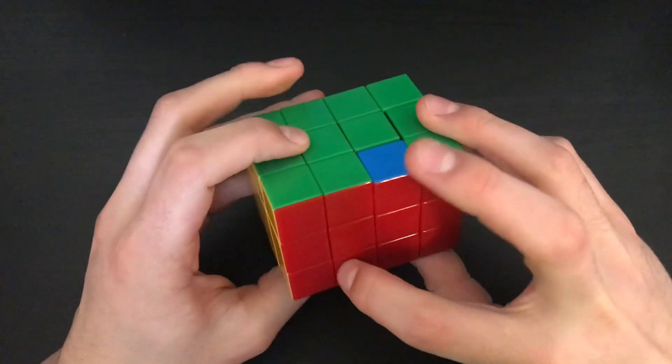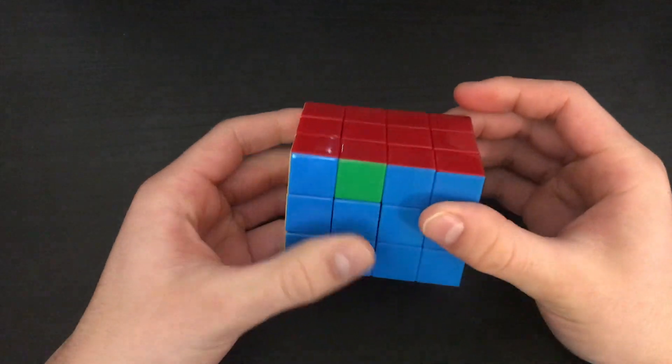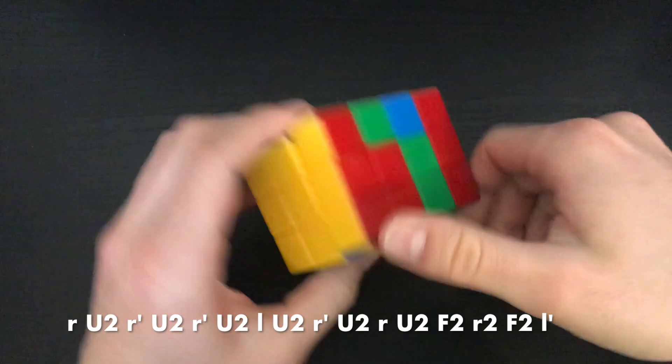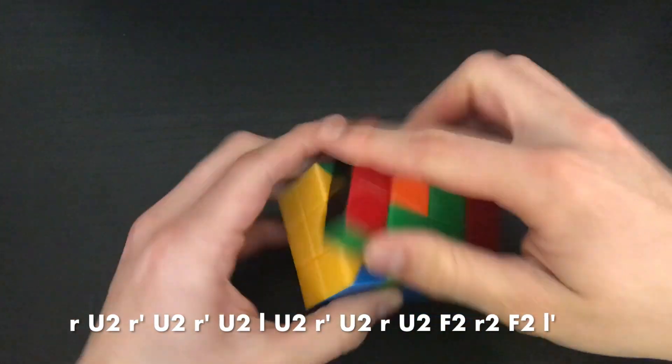For swaps between two wings, it's likely that you can apply your big blind parity alg. This is mine, and it works. And I'm going to guess that most others work as well.